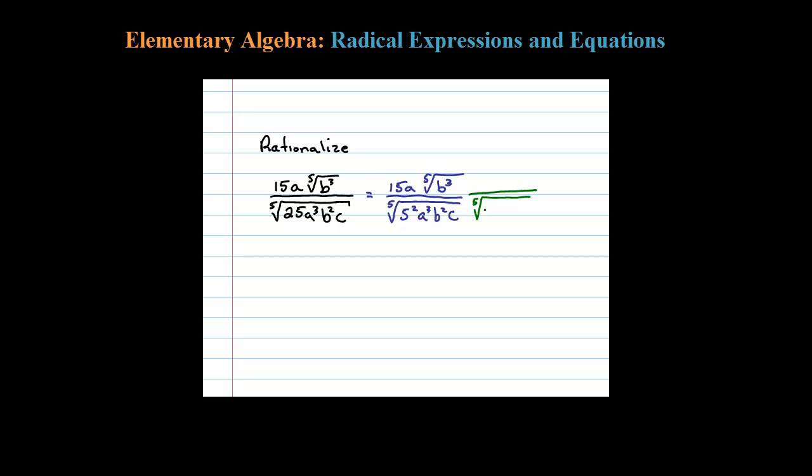I already have two, so I need three more, a squared b to the third, and since there's only one C, I need C to the fourth. Okay, whatever you multiply the denominator by, you have to multiply the numerator by the exact same thing.